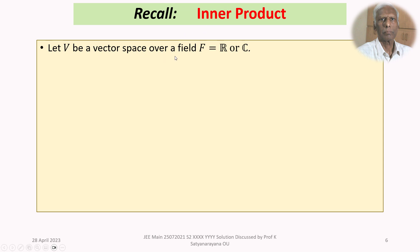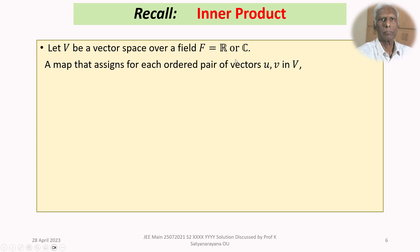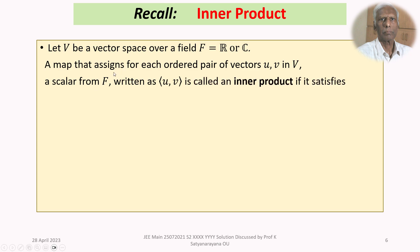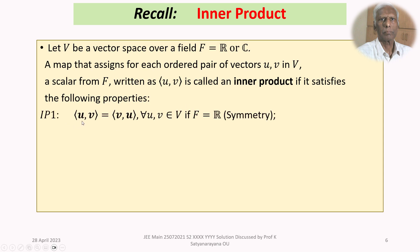Before going into the discussion of the solution, let us recall the concept of inner product. Let V be a vector space over a field F — that is, the field of real numbers or the field of complex numbers. A map that assigns for each ordered pair of vectors u, v in the vector space V a scalar from F is called an inner product if it satisfies the following four properties.